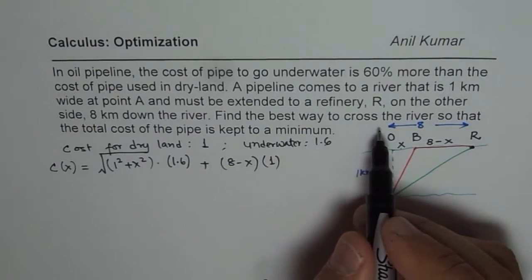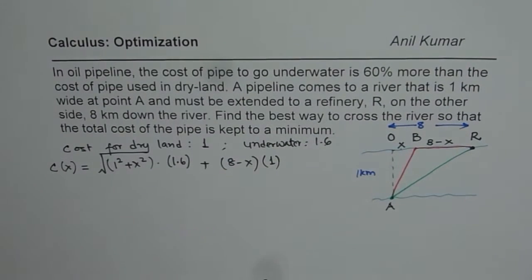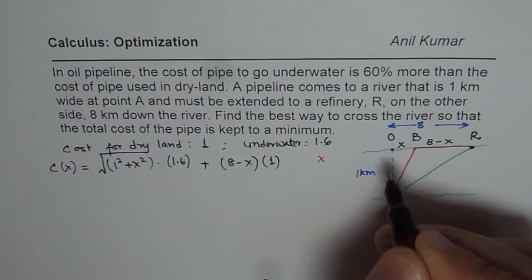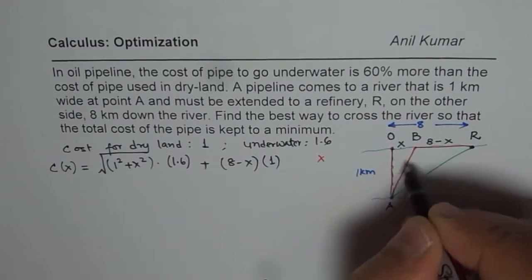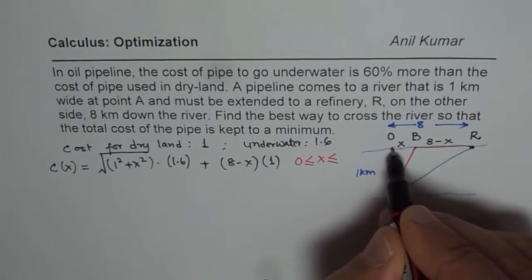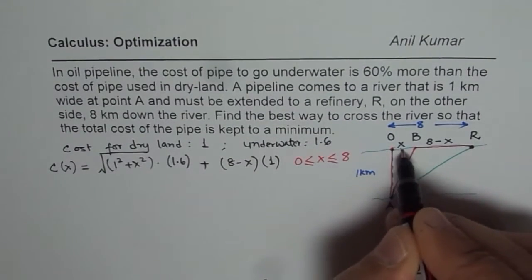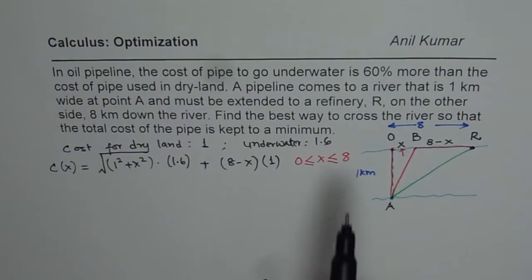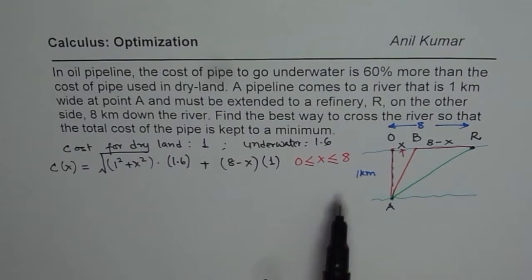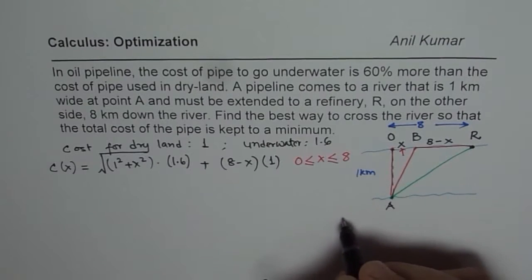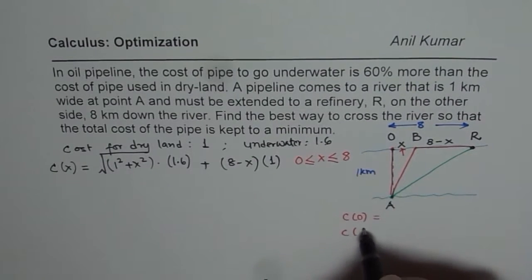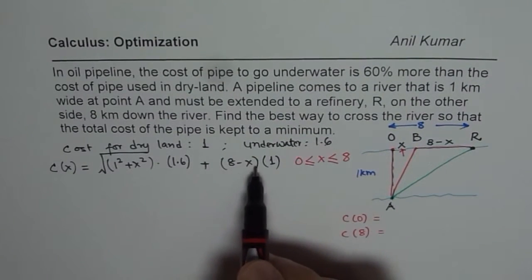Now to minimize the cost, we can see what x could be. x could be 0 if we go right across, and the maximum for x is up to 8. These are the boundary conditions. We can find the cost when x is 0 and when x is 8 to compare the results with the critical number.